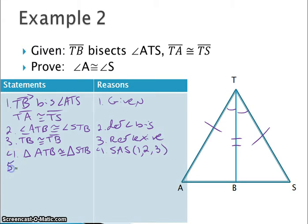And in step 5, I can prove angle A is congruent to angle S by CPCTC. Those are corresponding parts. Notice angle A is listed first. Angle S is listed first. So corresponding parts of congruent triangles are congruent.